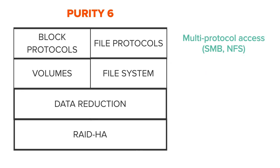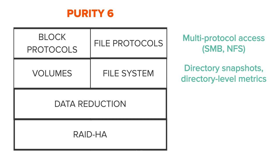The SMB and NFS protocols bring consolidated storage to the flash array, complementing its existing block capabilities, while the file system offers features like directory-level snapshots and directory-level performance and space monitoring.